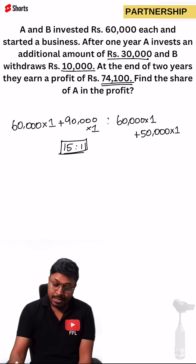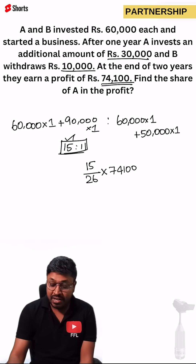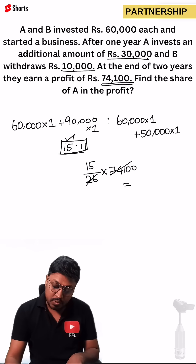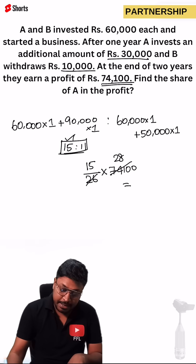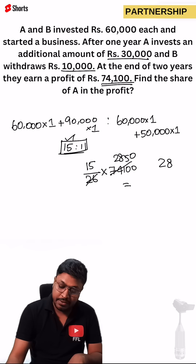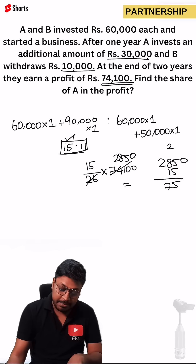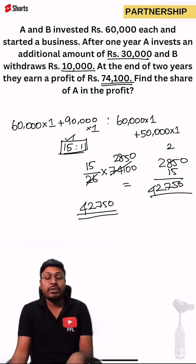Now we need to find A's profit share. A's investment ratio is 15 out of a total of 26, so A's share = 15/26 × 74,100. Solving this gives 42,750 rupees, which is the profit share of person A.